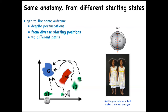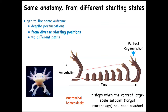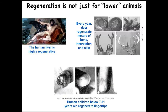Animals like the axolotl retain regenerative ability throughout their lifetime. Amputate the limb anywhere and they'll grow exactly the right amount, do complex patterning, and then stop — when a correct salamander arm has been completed. They can regenerate eyes, jaws, tails, ovaries. Humans and other mammals can also do this a little: we regenerate our livers; deer regenerate antlers at a rate of a centimeter and a half of new bone per day.